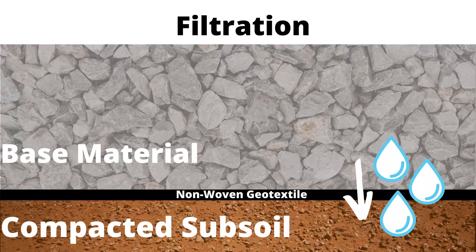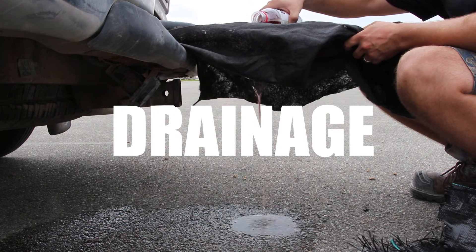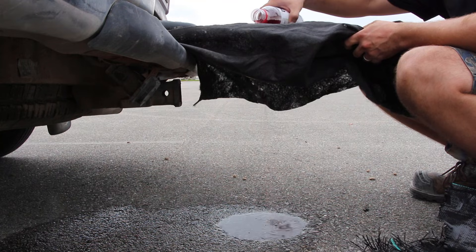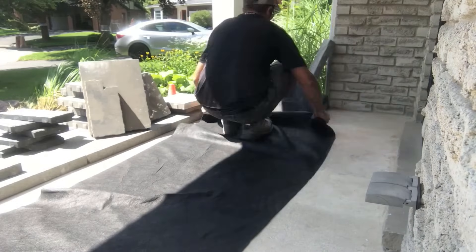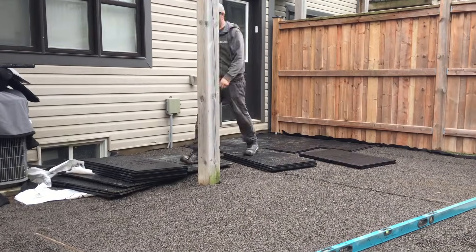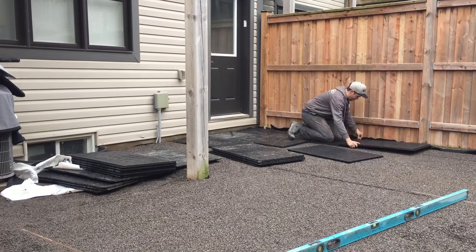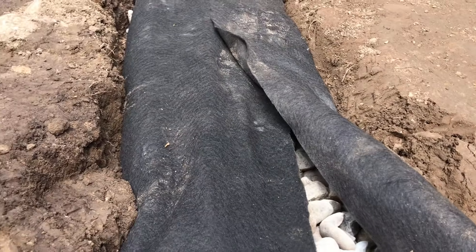The filtration of geotextiles allows for the removal of material to prevent contamination of base or backfill material, while drainage allows water to freely flow through the geotextile. When choosing the right geotextile for your project there are a few factors to consider. Before we get into those factors, we need to learn more about the two major types of geotextiles and what their properties are.